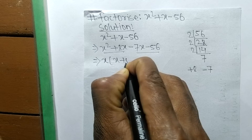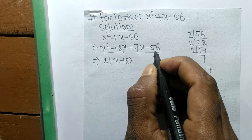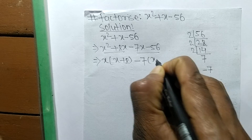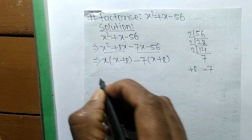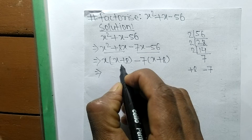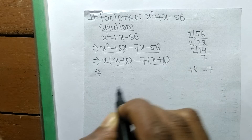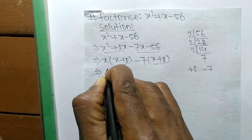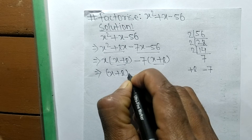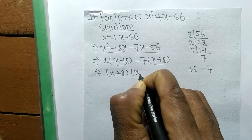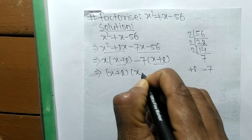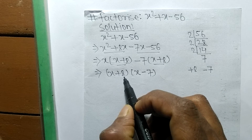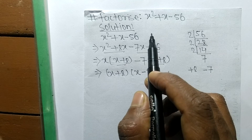In the first pair the common factor is x, so the remaining is x plus 8. In the second pair the common factor is minus 7, and the remaining part is also x plus 8. Since x plus 8 is common in both pairs, we factor it out. The remaining parts are x and minus 7.